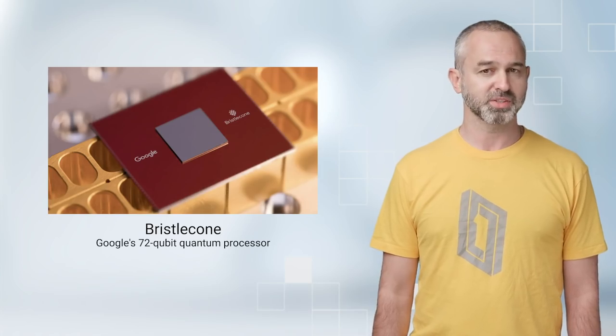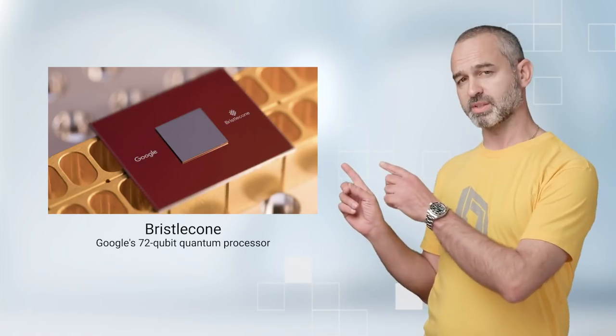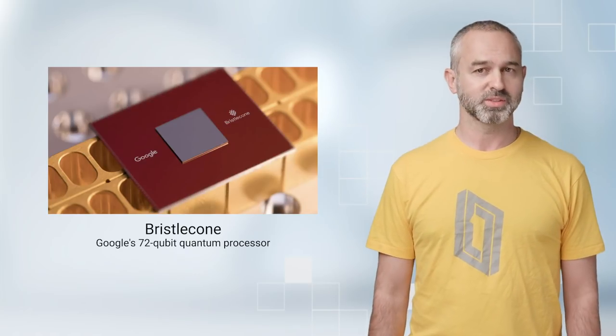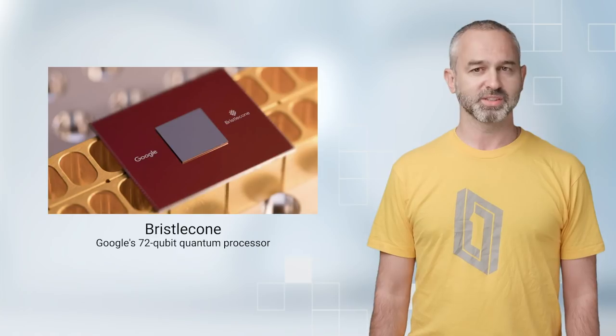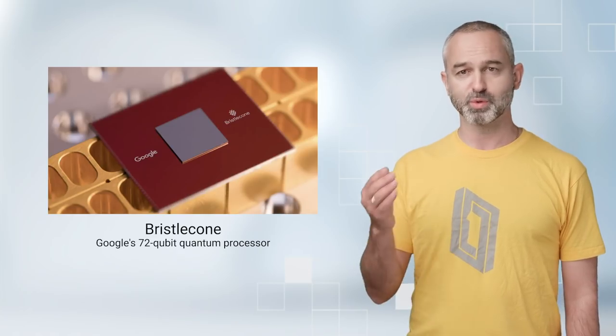The latest experimental quantum processor produced at Google, Bristlecone, has 72 qubits or quantum bits. We're testing quantum circuits in Bristlecone with the goal of reducing errors.